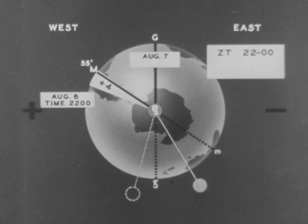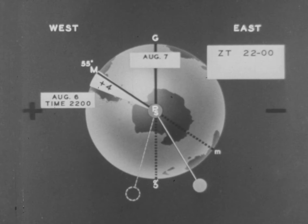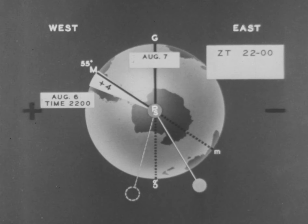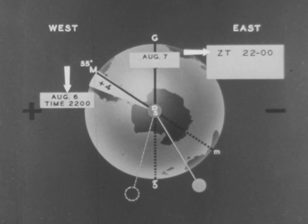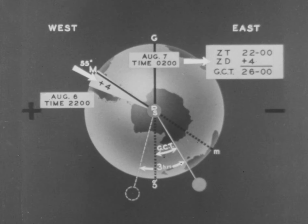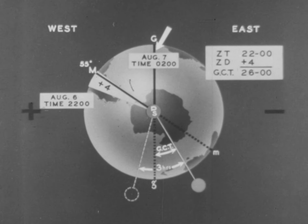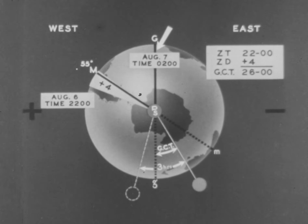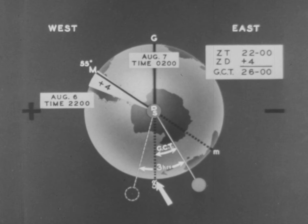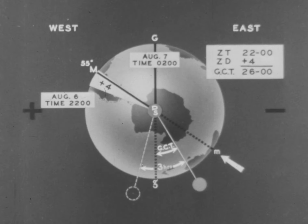Three hours pass by. Note that the sun has transited the lower branch of the Greenwich meridian, but it has not reached the lower branch of the local meridian. The zone time is now 2200 August 6th. To this add zone description plus four, and we find the sum is 26 hours. Therefore, at Greenwich it is the next day and the time is 0200 August 7th. The sun has transited the lower branch of Greenwich but has not reached the lower branch of the local meridian. Therefore, the date at Greenwich is one day later than the local date.